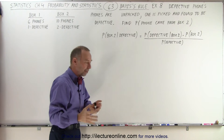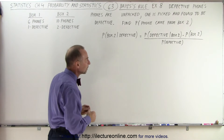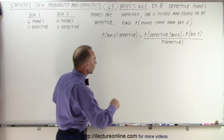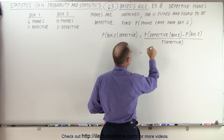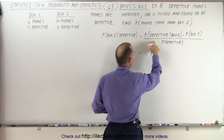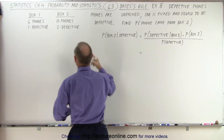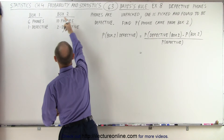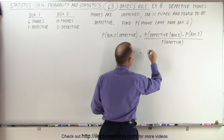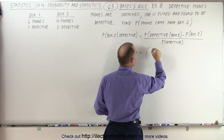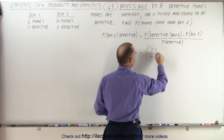Remember, we unpacked all the phones. The probability that we have a defective phone when it came from box two: in box two we have ten phones and two are defective, so that probability is two out of ten.